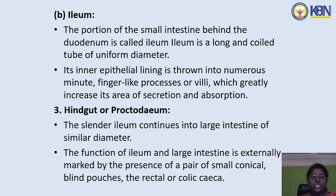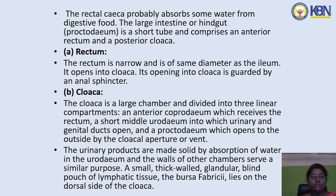The ileum is a long, coiled tube of uniform diameter. Its inner epithelial lining is thrown into numerous minute finger-like processes or villi, which greatly increase its area of secretion and absorption. The slender ileum continues into the large intestine of similar diameter. The junction of the ileum and large intestine is externally marked by a pair of small conical blind pouches, the rectal and colic caeca. The rectal caecum probably absorbs some water from digested food.